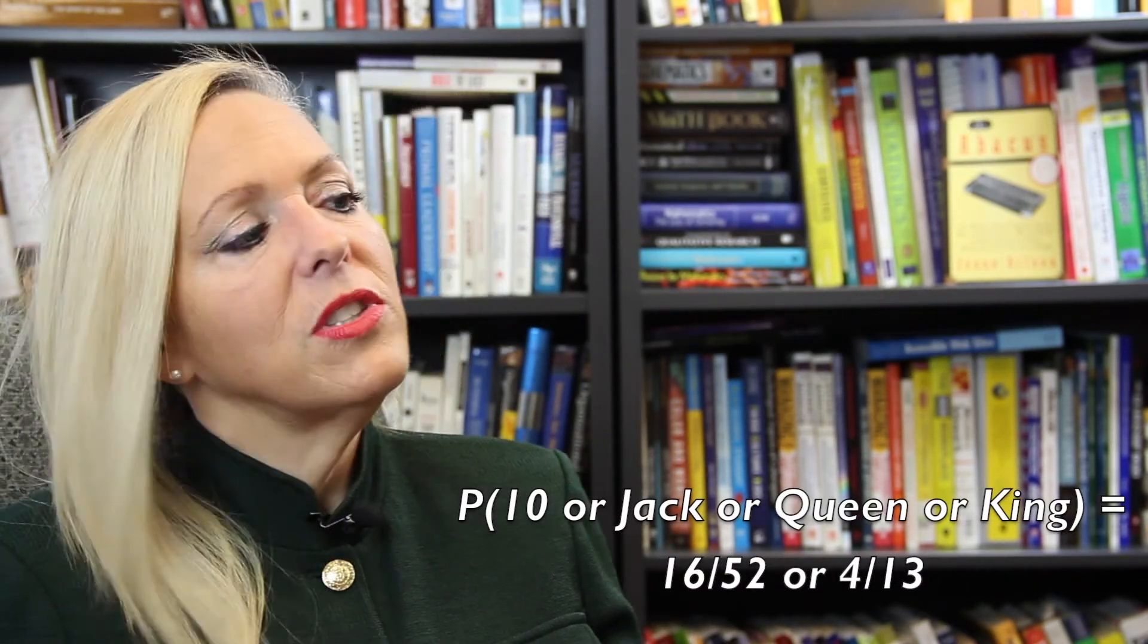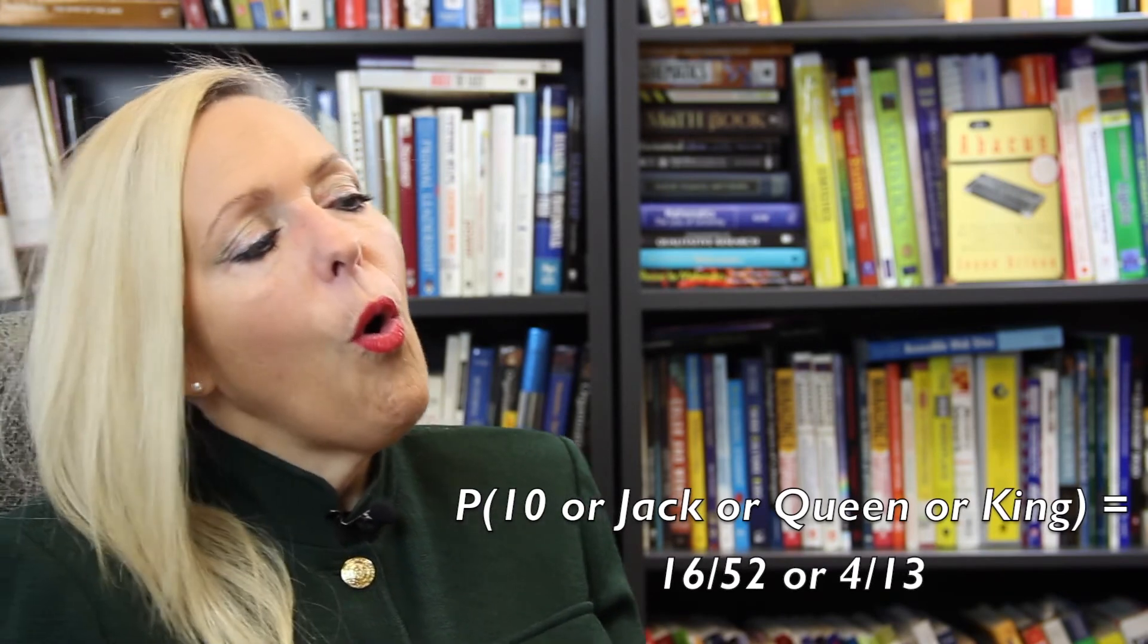To get a blackjack, you need a 10 card and an ace, which counts as 1 or 11. The 10 cards are 10, jack, queen, and king. There are 4 of each. So there are 16 10 cards in the deck. Therefore, the probability of the 10 card, 10, jack, queen, or king, equals 16 out of 52, or that reduces to 4 out of 13.